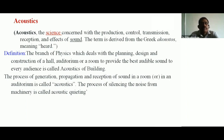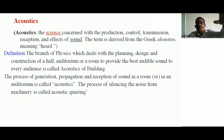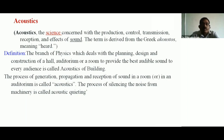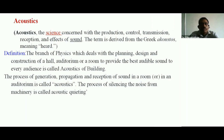The process of generation — if some person is producing sound, it moves from one place to the audience place, another place — so propagation, reflection, controlling, and reception of sound in a room or in an auditorium is called acoustics. The process of generation, propagation, and reception of sound in a room, auditorium, cinema hall, or classroom — that is called acoustics of building.